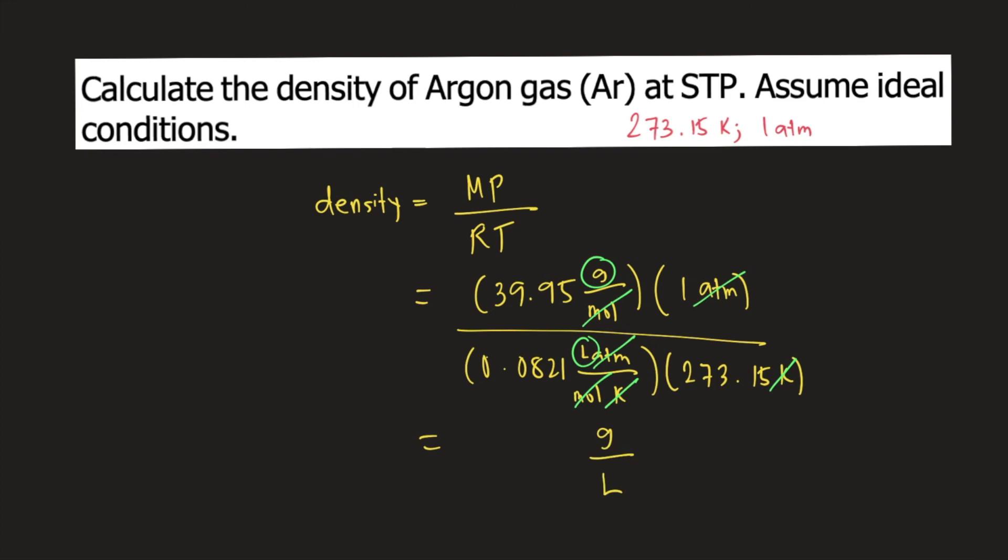If we compute the density of argon at standard temperature and pressure, this is equal to 1.78 grams per liter. This is the answer to the question.